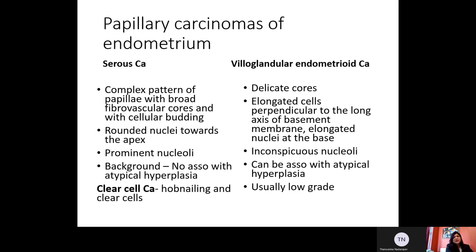When it is serous carcinoma, we can see a complex pattern of papillary with broad fibrovascular cores and cellular budding. Rounded nuclei are present towards the apex with prominent nucleoli. The background of the tumor shows no association with atypical hyperplasia. For villoglandular endometrioid carcinoma, we have delicate fibrovascular cores with elongated cells perpendicular to the long axis of the basement membrane and elongated nuclei present at the base of the cell. Nucleoli are inconspicuous and these cases can be associated with atypical hyperplasia and are usually low-grade.